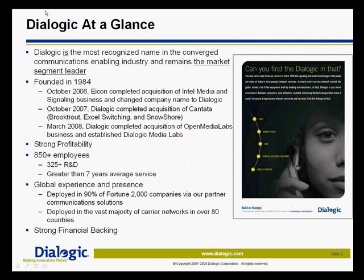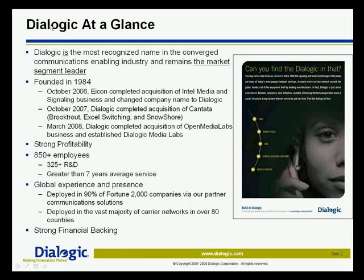Just want to do a quick introduction to Dialogic for those of you who might not know who we are. We started out in the CTI business back in the mid-'80s, grew up, were a public company at one point, then acquired by Intel about 18 months ago. We were spun back out from Intel, purchased by somebody called Icon, which then changed its name to Dialogic. Since that time, we have acquired the additional assets of Contata, which you may know as the roll-up of the Excel switching group, Snow Shore Networks, and the Brook Trout product line.